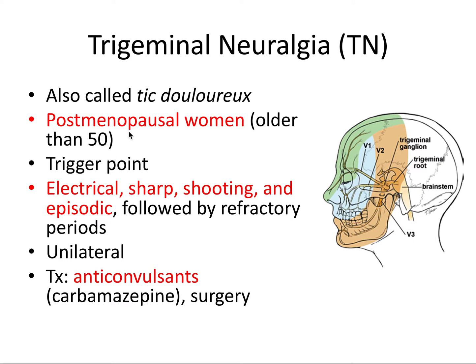There's typically a trigger point involved with trigeminal neuralgia. You touch one part of the face and it sends this electrical, sharp, shooting, and episodic pain, followed by refractory periods. Pain is brief — it can be a few seconds up to one or two minutes long — and it's episodic, or paroxysmal, which means there are sudden spasmodic attacks. Pain may occur several times a day, and patients typically experience no pain between episodes during these refractory periods of relief.